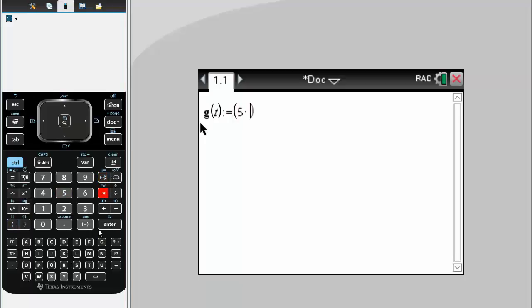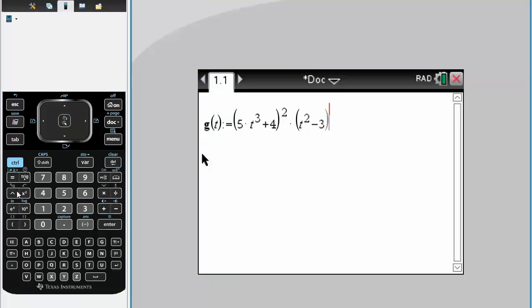5 times T cubed plus 4, squared, times T squared minus 3, cubed.